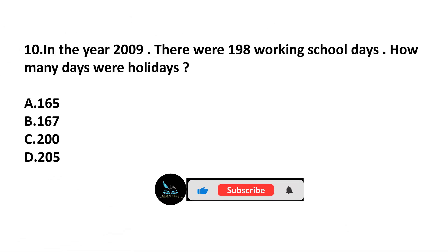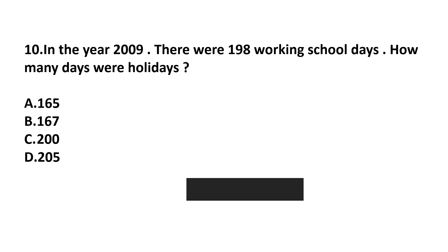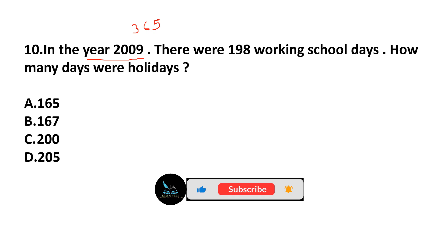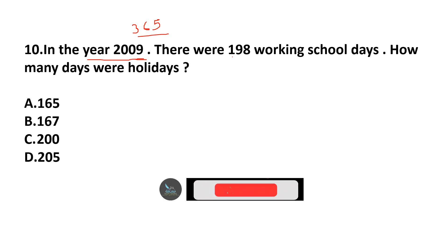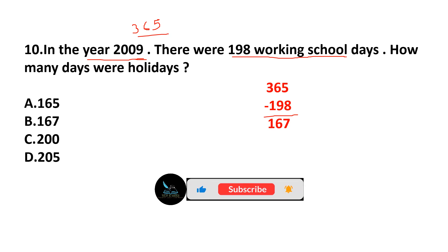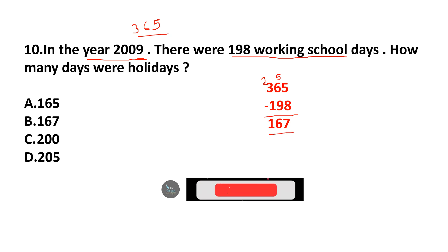Question 10: In the year 2009 there were 198 working school days. How many days were holidays? 2009 is not a leap year, so there are 365 days. Holidays: 365 minus 198. 15 minus 8 is 7, borrow so 15 minus 9 is 6, and 2 minus 1 is 1, giving 167. Answer: option B.